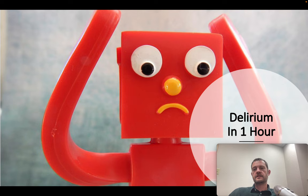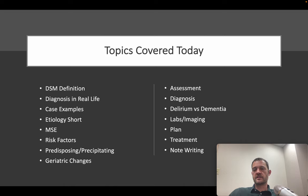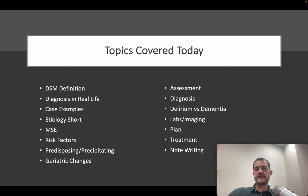Hello and welcome back. This is Dr. Mellon with our Mostly True Psychiatry series. We're going to be talking about delirium in one hour or less. Topics covered today include the DSM definition, diagnosis, how patients present in real life, case examples, the short version of causes and etiology, mental status exam, risk factors, predisposing and precipitating factors, assessment, diagnosis, labs and imaging, general and specific plans for patient populations, and note writing.